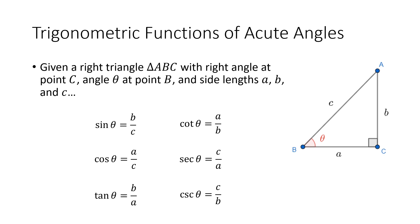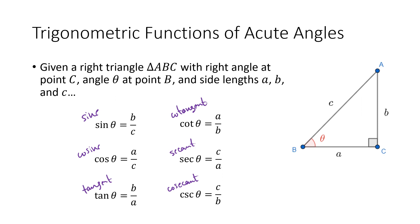The six trig functions use three-letter abbreviations: SIN stands for sine, COS for cosine, TAN for tangent, COT for cotangent, SEC for secant, and CSC for cosecant. You may notice that half of these start with the letters CO and the other half don't — we'll talk about that in the next video. The ratios are: sine of theta is B over C, cosine of theta is A over C, tangent of theta is B over A, cotangent of theta is A over B, secant of theta is C over A, and cosecant of theta is C over B.